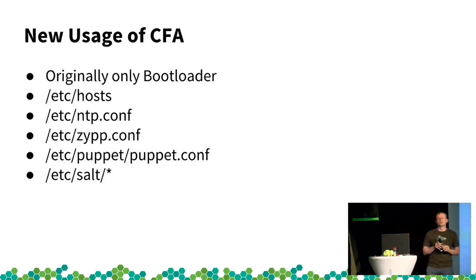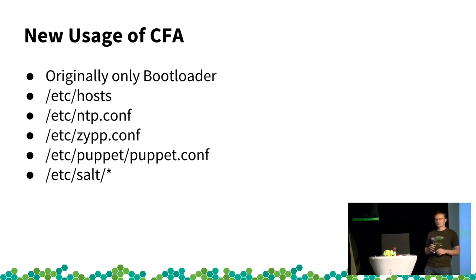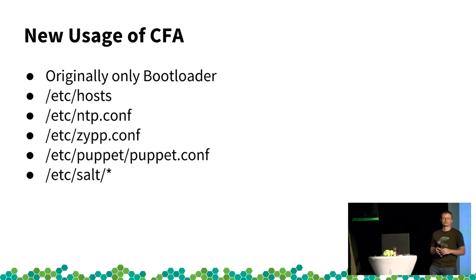We're still increasing usage of CFA. Originally it was introduced for the bootloader, which has various formats. Now we also use it for /etc/hosts, NTP — where we found and fixed a bug in an Augeas lens that prevented parsing the new IPv6 option — for modifying zip configuration, and also for configuring Puppet and Salt, as mentioned in the morning's EMOS presentation.